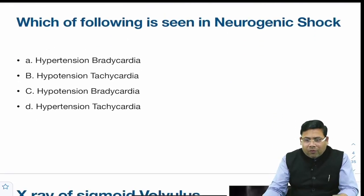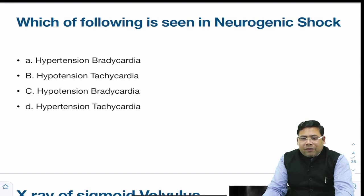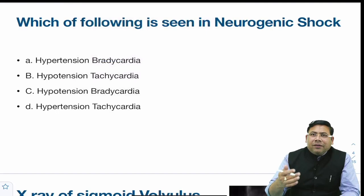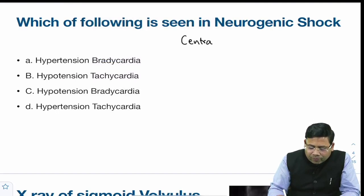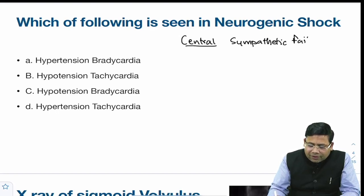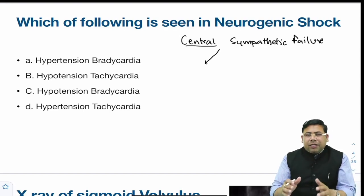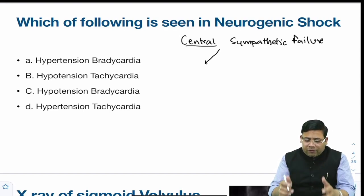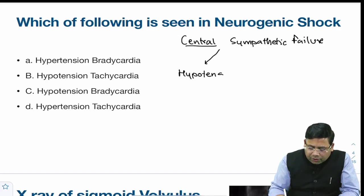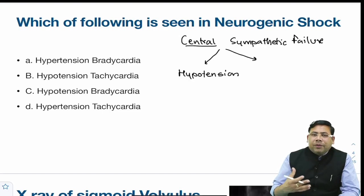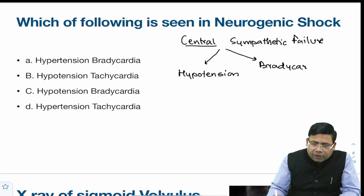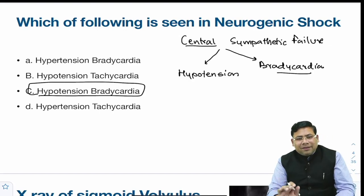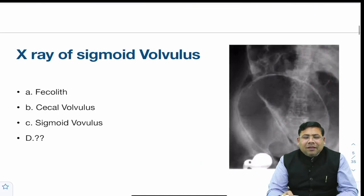When we talk about neurogenic shock, it is a state of central sympathetic failure. Whenever there is loss of central sympathetic tone, there is peripheral vasodilation and pooling of blood, resulting in hypotension. Along with that, loss of sympathetic tone causes bradycardia. So hypotension and bradycardia are the classical features of neurogenic shock.